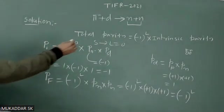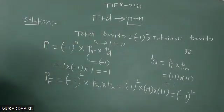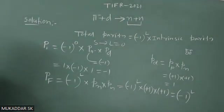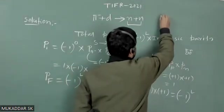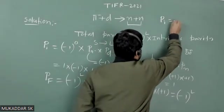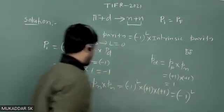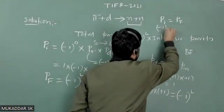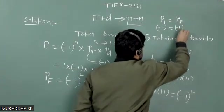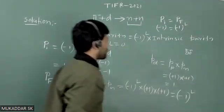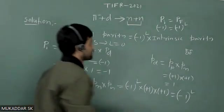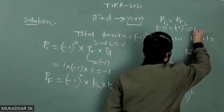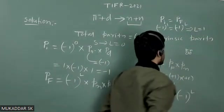Since this interaction is governed by strong interaction, the initial state parity should be equal to the final state parity. So we can write P_i equals P_f. We have calculated that P_i is minus one, and that should equal minus one to the power L. Comparing the powers, we get that the total orbital quantum number of the final state L equals one.